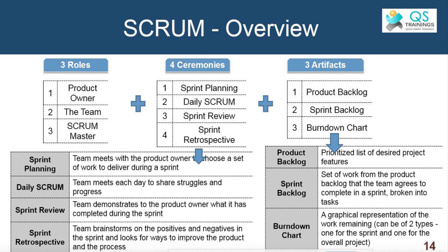The sprint formally ends with a retrospective. The retrospective is about reflecting on what happened in the sprint — what were the good things, what were the not-so-good things, and how do we improve further? Remember, scrum is all about continuous improvement.